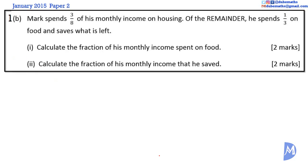Mark spends 3 eighths of his monthly income on housing. Of the remainder, he spends one third on food and saves what is left. Calculate the fraction of his monthly income spent on food.